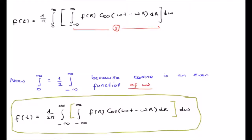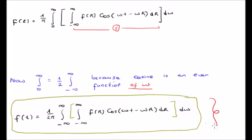The next thing we can notice is that cosine is an even function. Since we are integrating it with respect to omega, we can replace the zero-to-infinity integral by one half of the fully infinite integral. This results in the equation written at the bottom of the screen. Note that we now have a 1 over 2π outside in front — the pi is a legacy issue from the Fourier series, and the half comes from changing to a fully infinite integral.